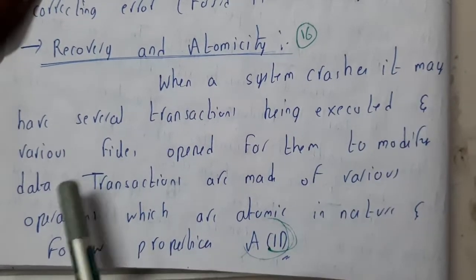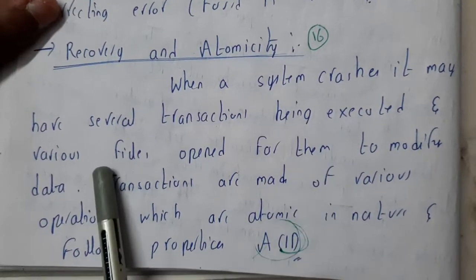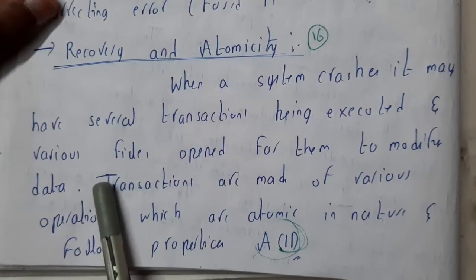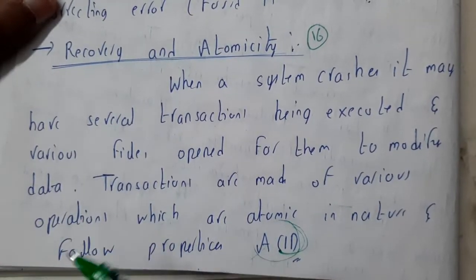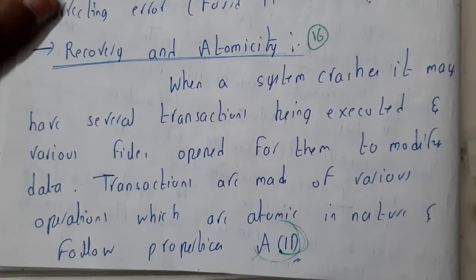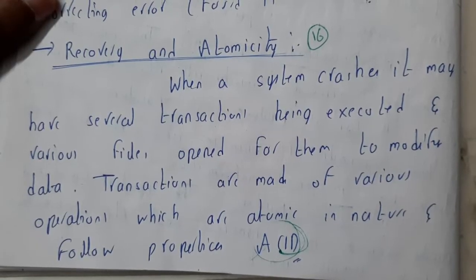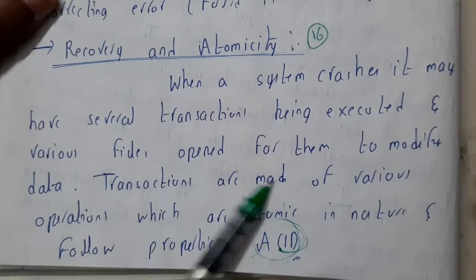Whenever a system is crashed, it may be that several transactions are being executed and various files are opened to modify the data. There can be many transactions going at a particular moment of time, with many files updating second to second. What if a power failure or any kind of system crash occurs at that moment?